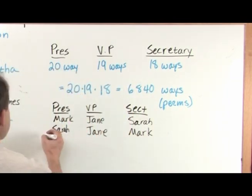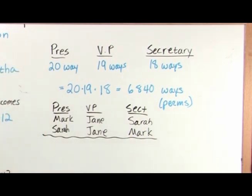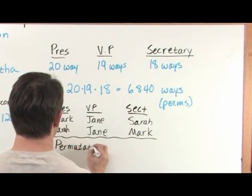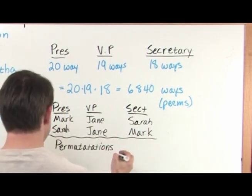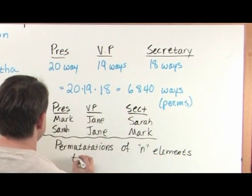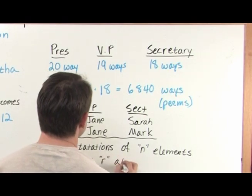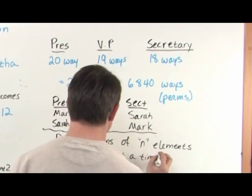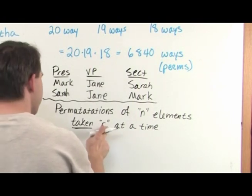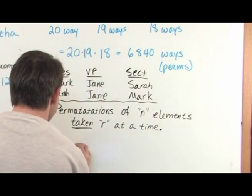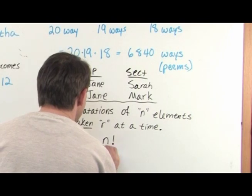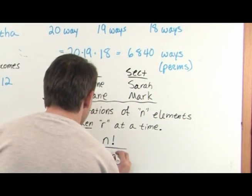Now let me introduce something I hinted about a moment ago — you will see this in your book. Permutations of n elements taken r at a time. I'm going to underline the word 'taken' and come back to that. What you'll see in your book is n P r, which is defined as n factorial over n minus r factorial.